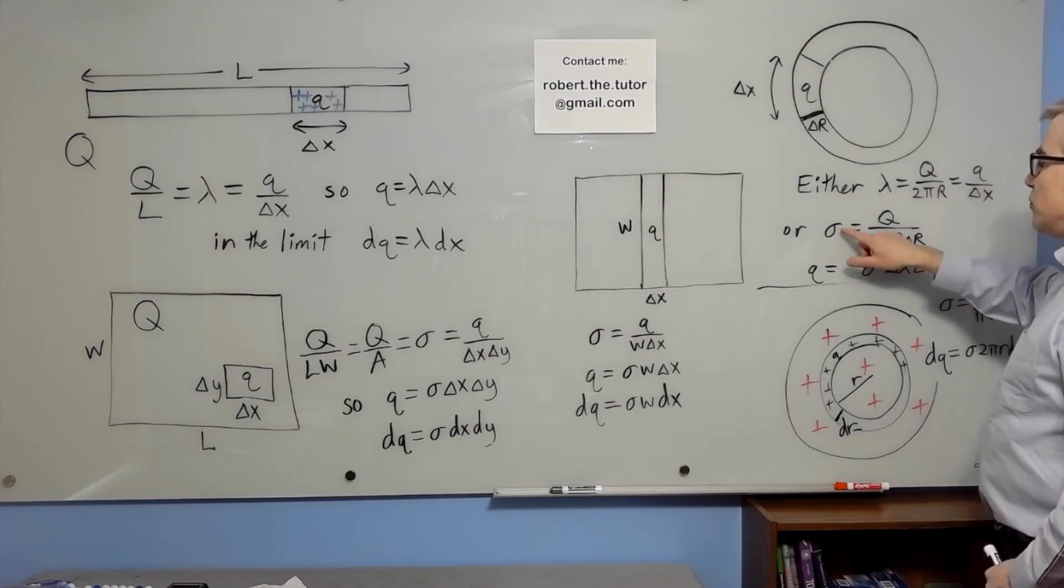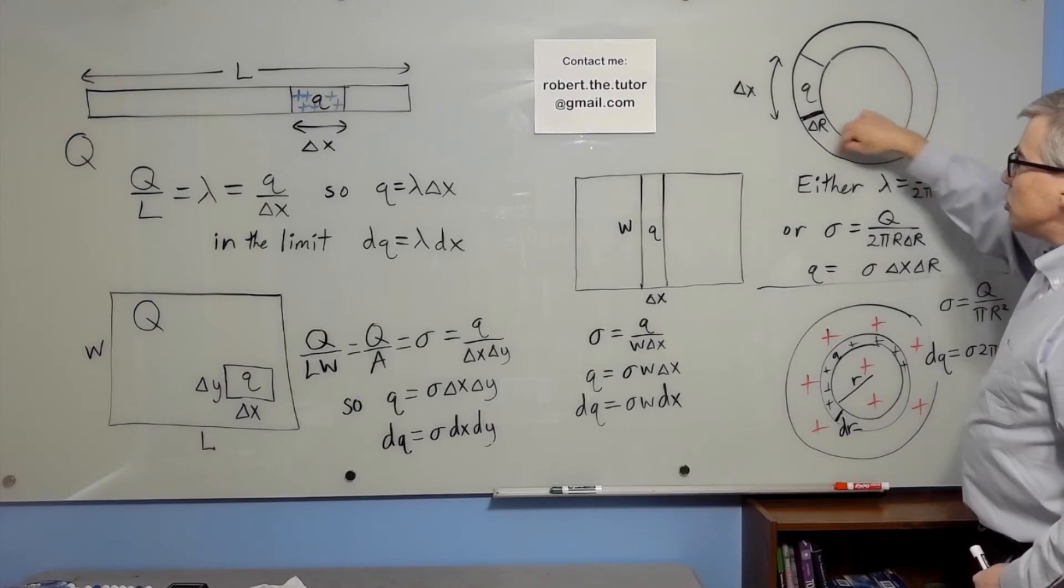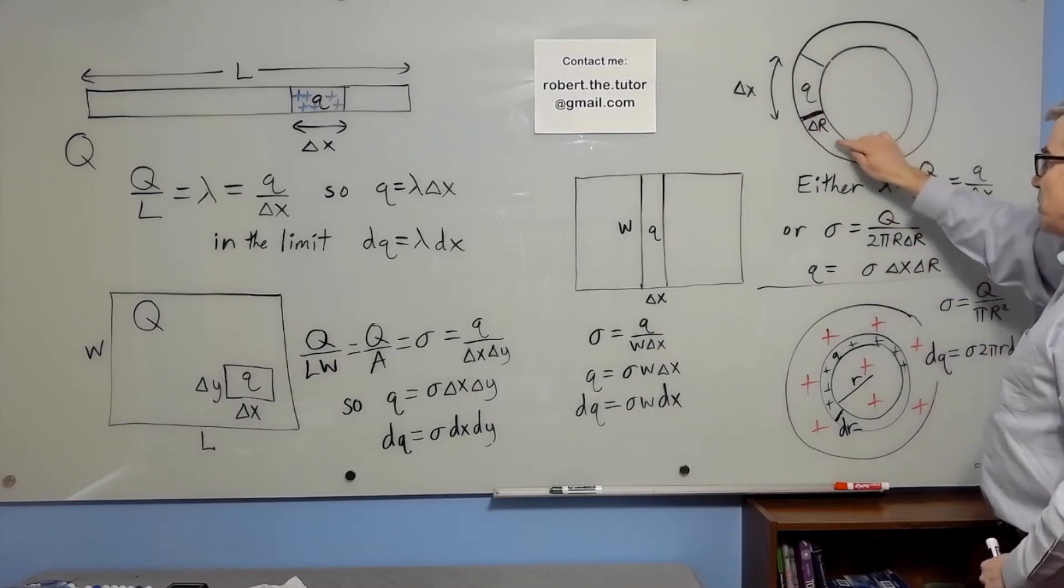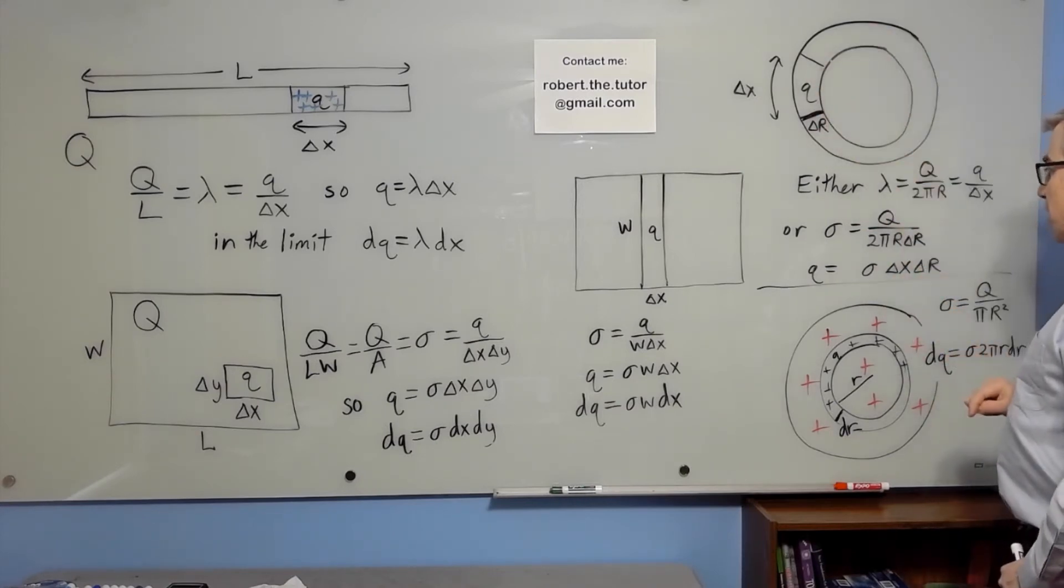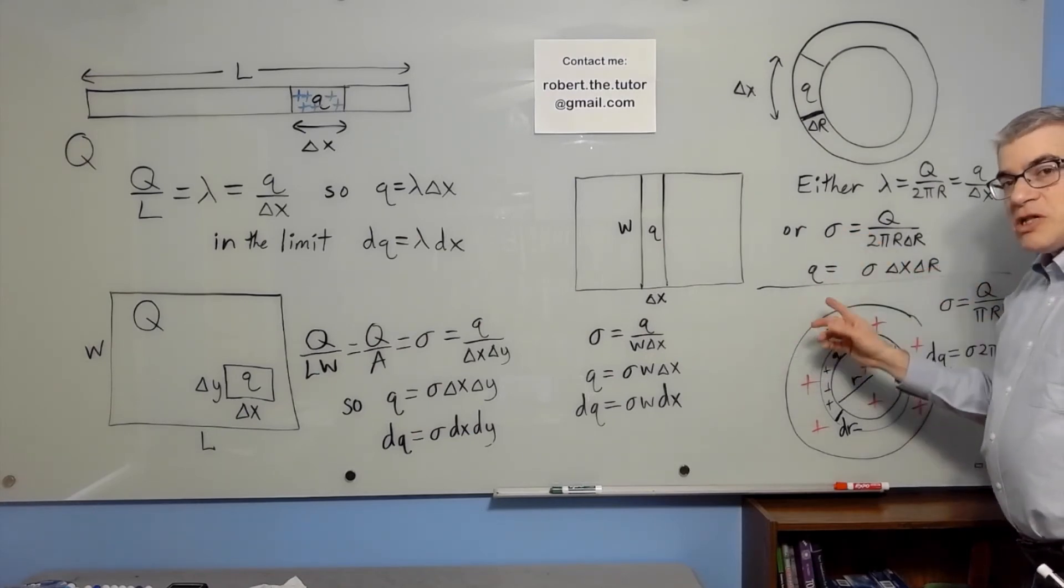Or you could view it as charge per area Q divided by 2 pi r delta r, which would be approximately the area of that ring. So Q would be sigma delta x delta r, or it would be a double integral.